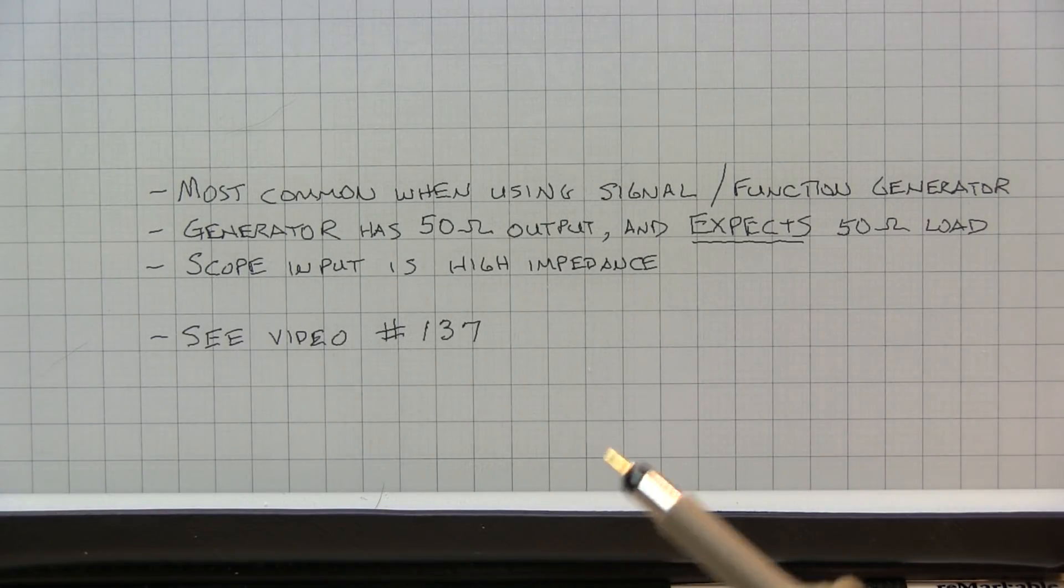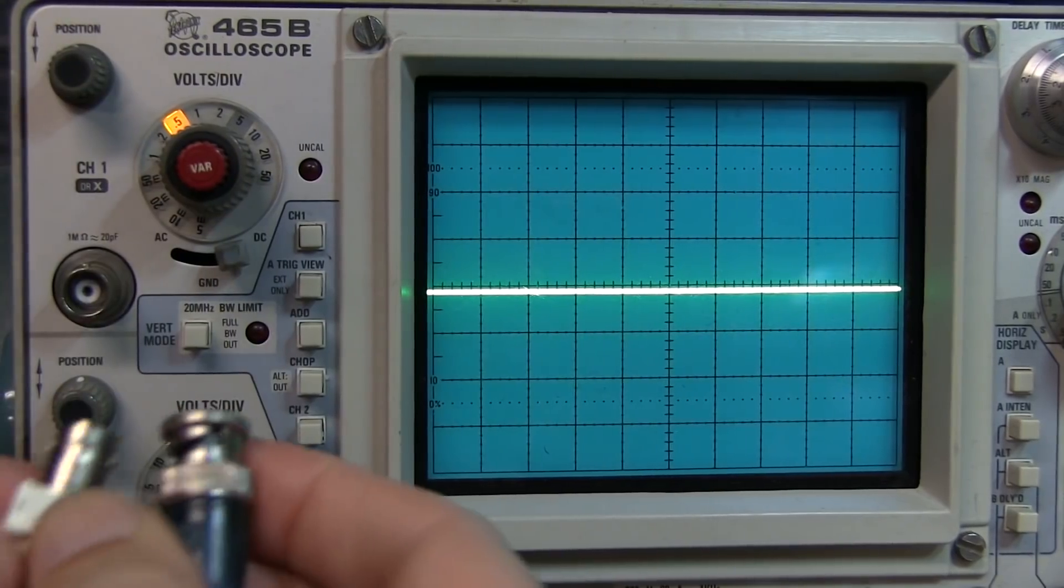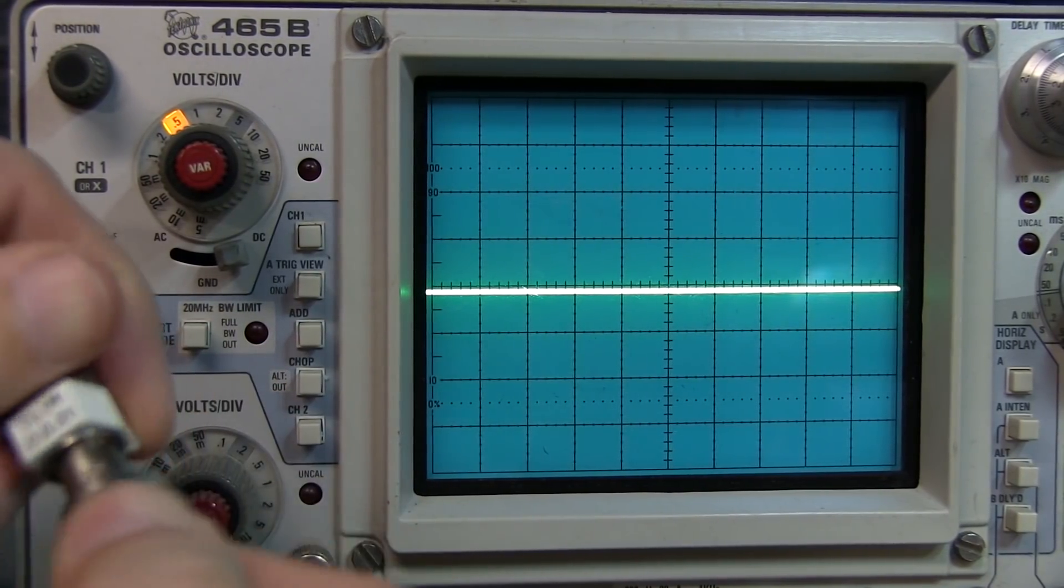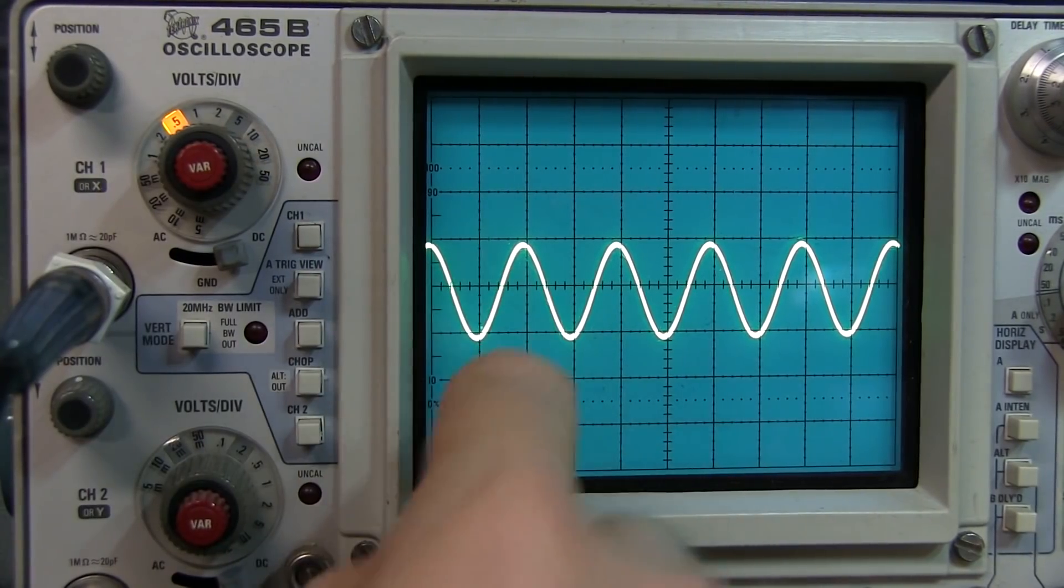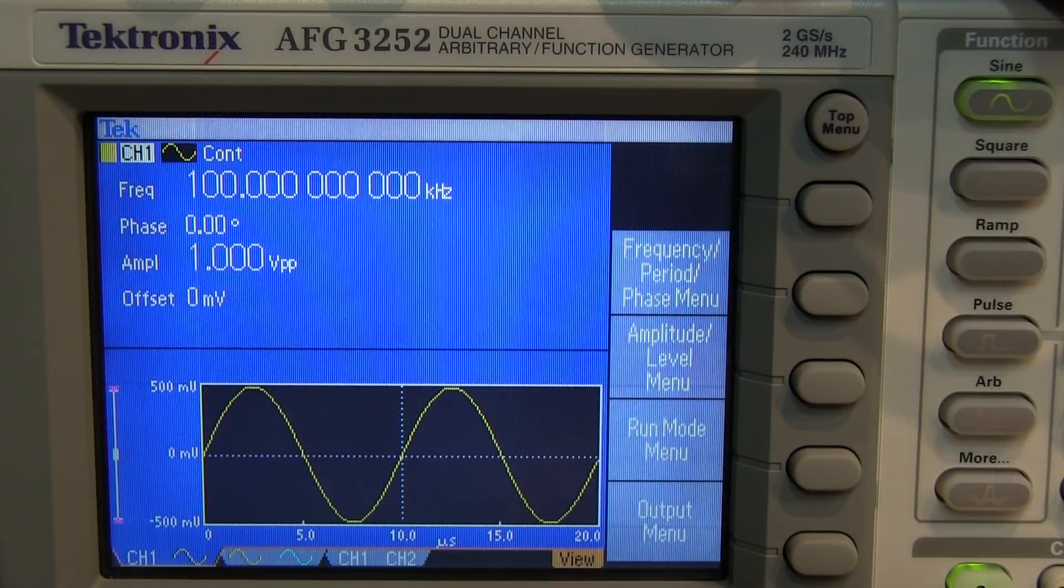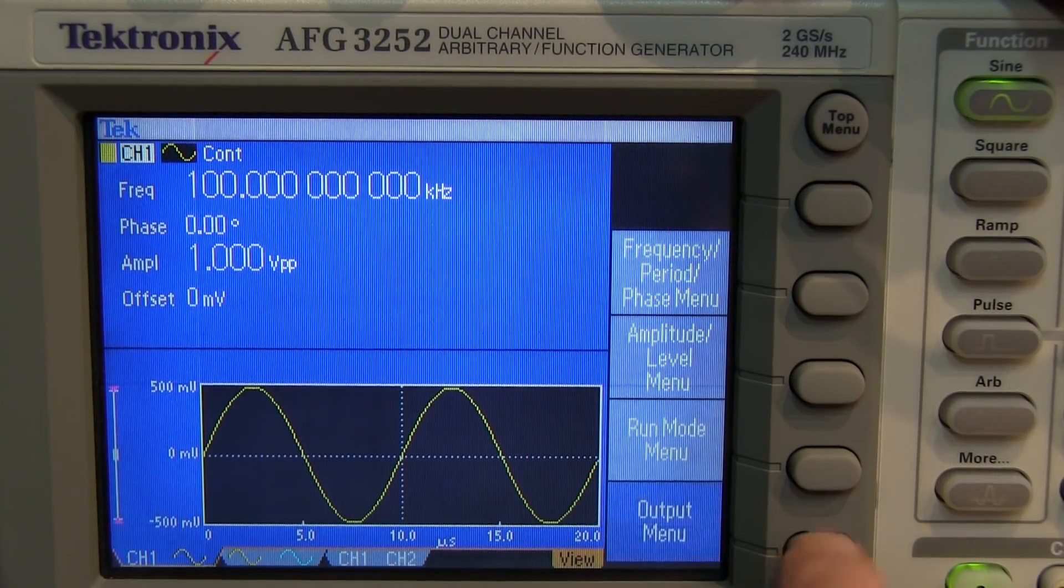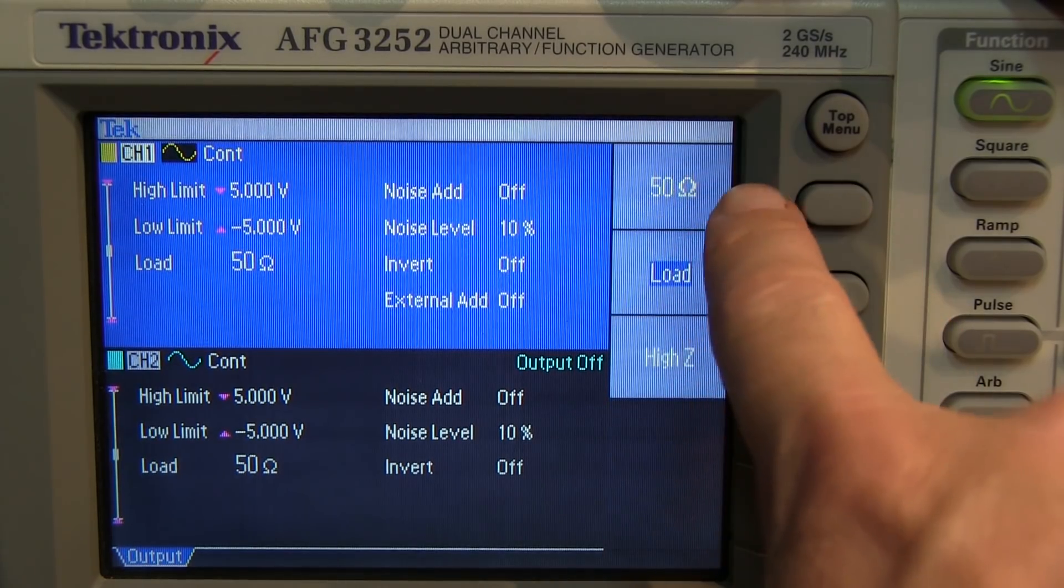Now, there are two ways to deal with this. One is to put a 50 ohm through terminator on the end of the coax cable. And now the amplitude of the signal is going to be appropriate because the generator is seeing the expected 50 ohm load. Or go back to the function generator and tell it what load impedance you're actually applying at the end of the coax, whether it's 50 ohms,